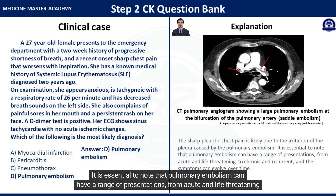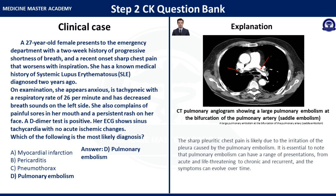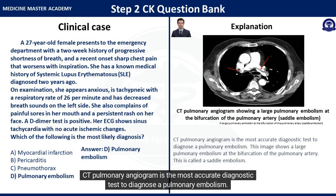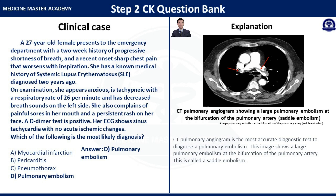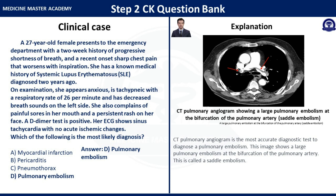It is essential to note that pulmonary embolism can have a range of presentations, from acute and life-threatening to chronic and recurrent, and the symptoms can evolve over time. CT pulmonary angiogram is the most accurate diagnostic test to diagnose a pulmonary embolism. This image shows a large pulmonary embolism at the bifurcation of the pulmonary artery — this is called a saddle embolism.